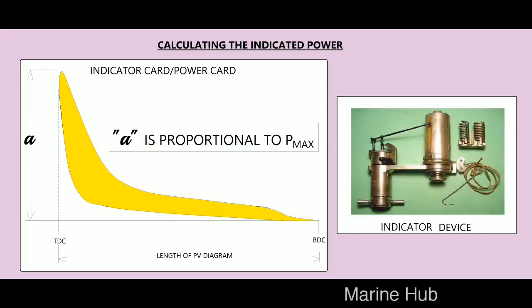There is a special indicator device to draw this diagram. A metal stylus draws a clear pressure path diagram which records the pressure curve within the engine cylinder. This is called indicator card or power card.